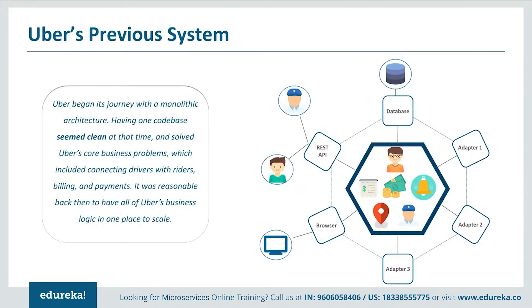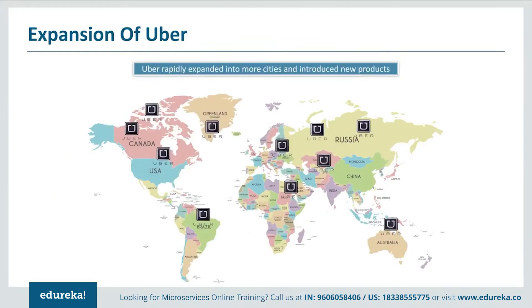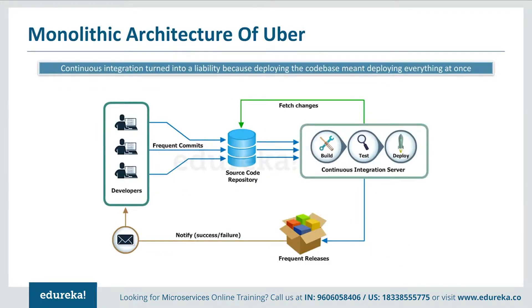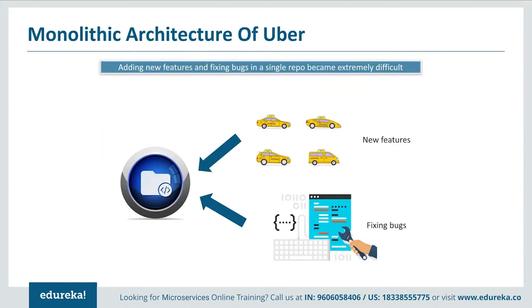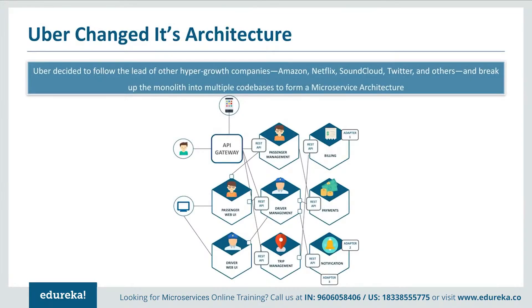Having one codebase seemed clean at that time and solved Uber's core business problems, which included connecting drivers with riders, billing, and payments. But as Uber started expanding worldwide into many more cities, it continuously faced problems of scalability and continuous integration. Developers could not continuously build, test, deploy, and release software frequently as Uber expanded city-wide. Adding new features and fixing bugs in a single repository became extremely difficult. To avoid such challenges, Uber decided to follow the lead of hypergrowth companies like Amazon, Netflix, SoundCloud, and Twitter, and broke down its monolithic framework into multiple codebases to form a microservice architecture.